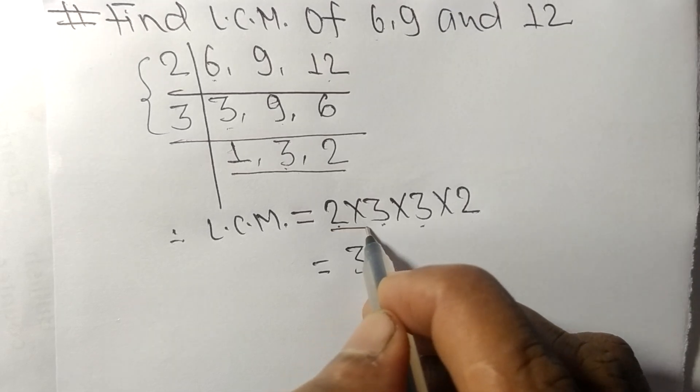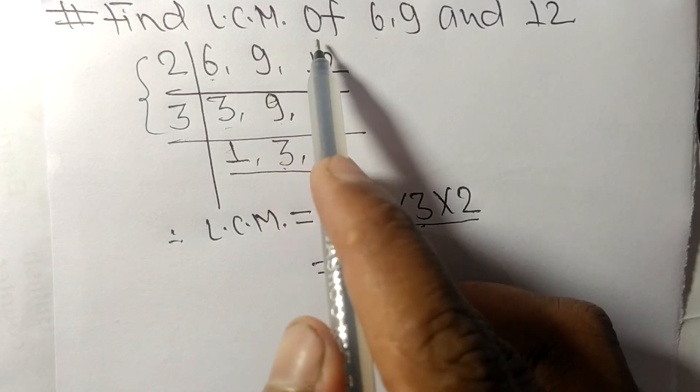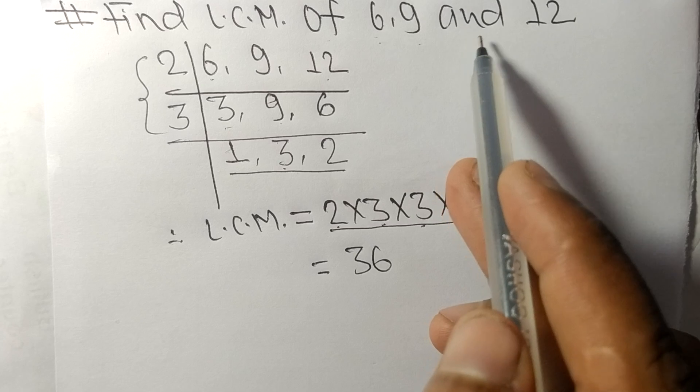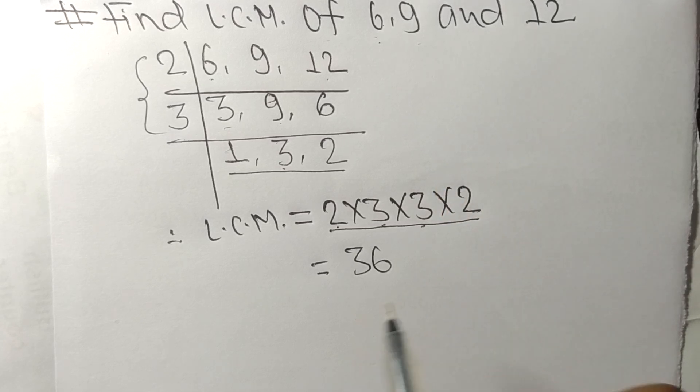By multiplying all these numbers, we got 36. So 36 is the LCM of 6, 9 and 12. So this much for today and thanks for watching.